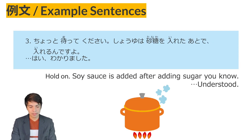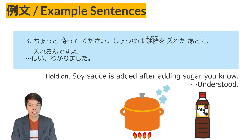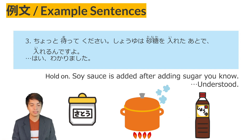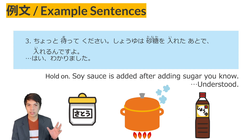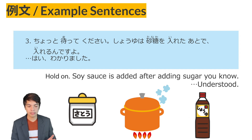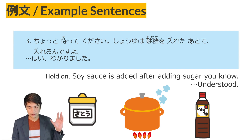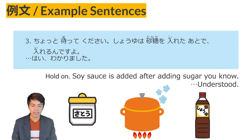Example sentence number three: Chotto matte kudasai. Shouyu wa sato wo ireta ato de irerun desu yo. Hai, wakarimashita. One person said, 'Please wait a moment.' Then, the soy sauce — sato wo ireta ato de, after adding the sugar — irerun desu yo, you will add it. So you add the soy sauce after adding the sugar.